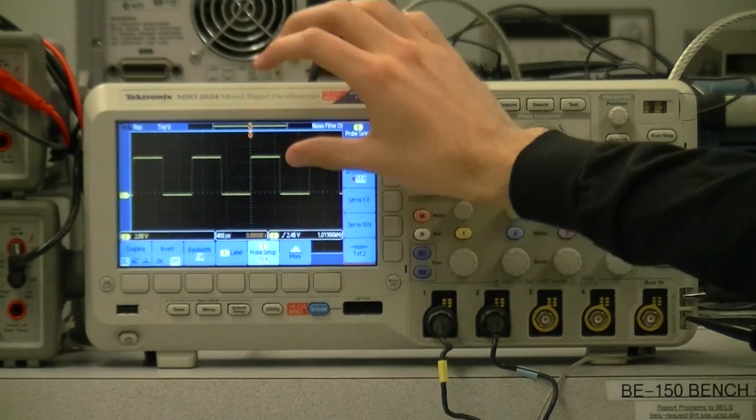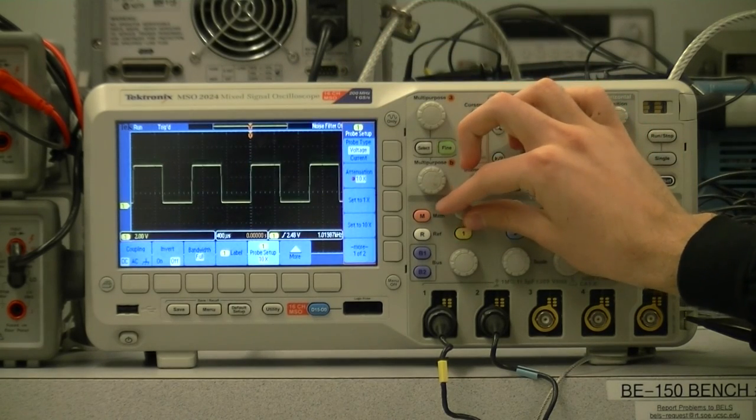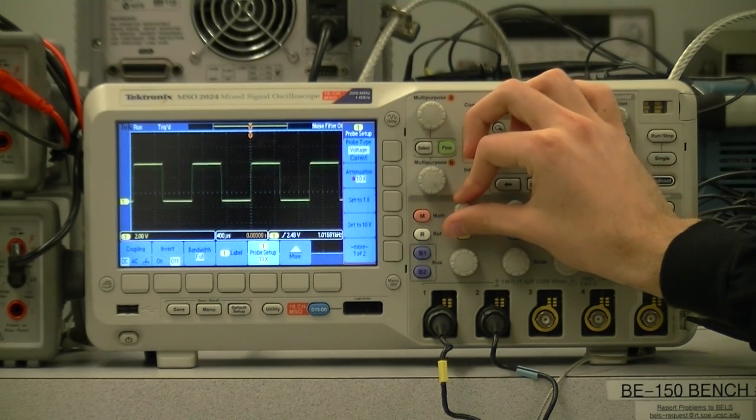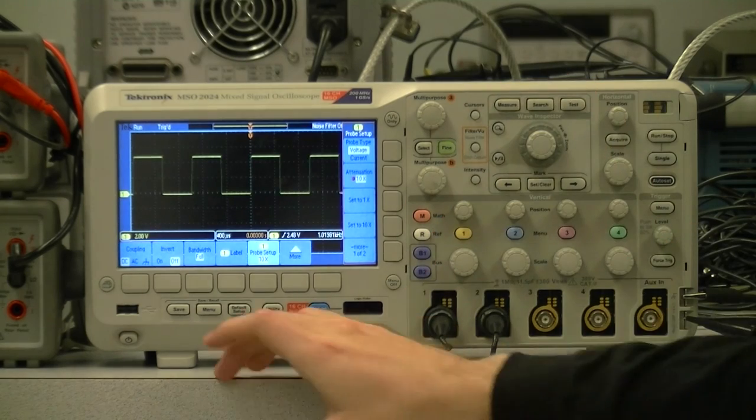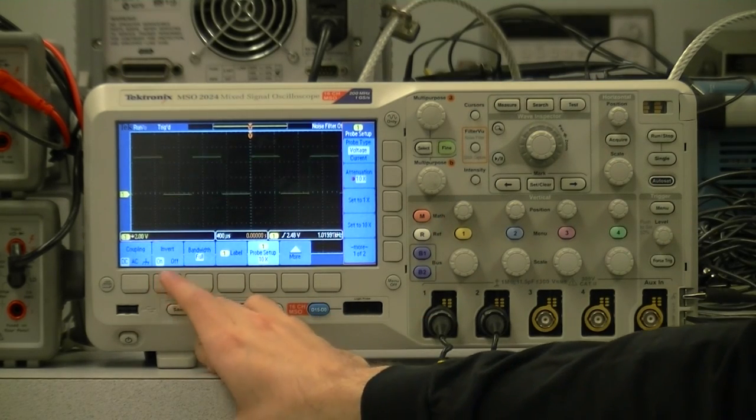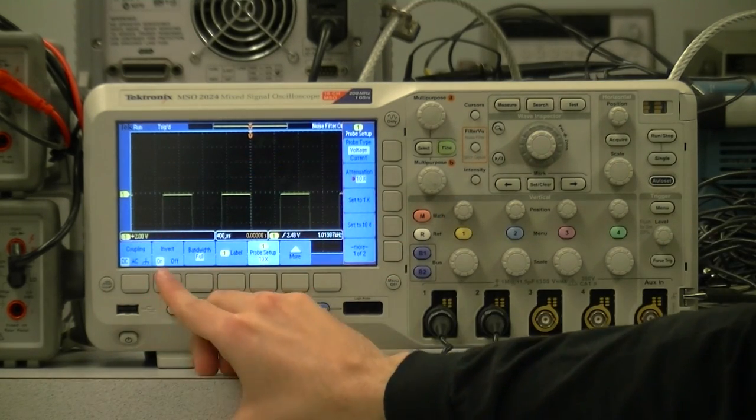Let's go back to DC coupling. Now we can see that this signal itself will move when we do this adjustment as well. The next option is invert, which will simply flip the signal. We won't be using that much.